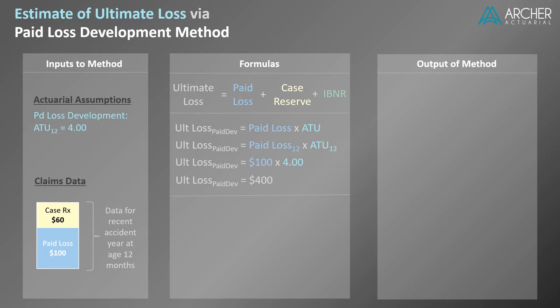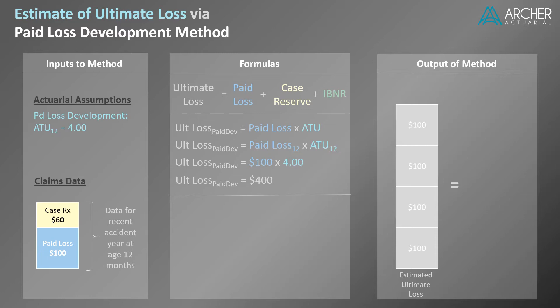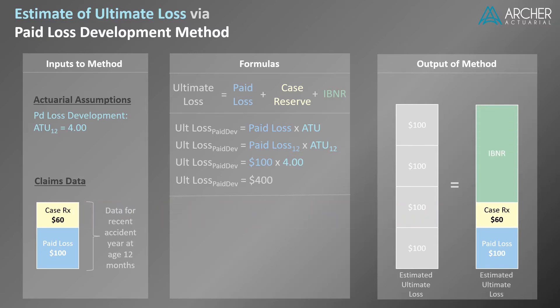Let's take a look at this method graphically. The estimated ultimate loss equals the paid loss times 4. We can use the identity formula for ultimate loss to break this into components: ultimate loss equals paid loss plus case reserves plus IBNR. We can once again use the identity formula to solve for IBNR: IBNR equals ultimate loss minus paid loss minus case reserves. Solving this formula, we see that IBNR equals $240.